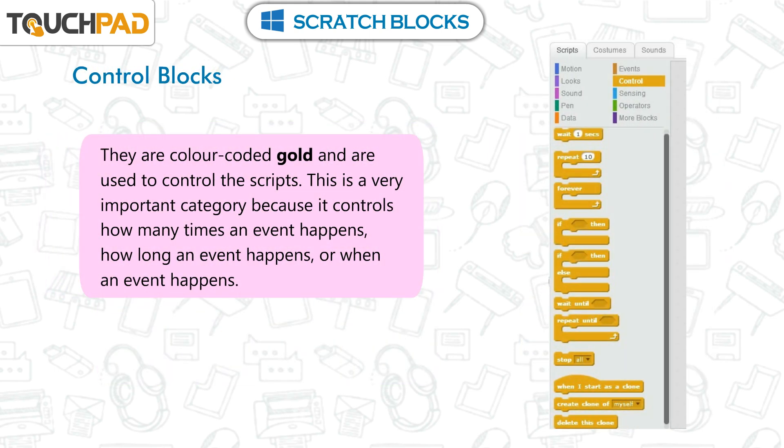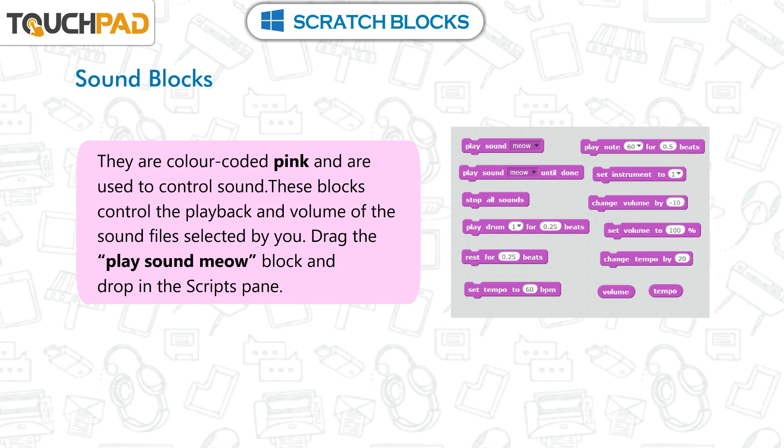Control Blocks are color-coded gold and are used to control the scripts. This is a very important category because it controls how many times an event happens, how long an event happens, or when an event happens.